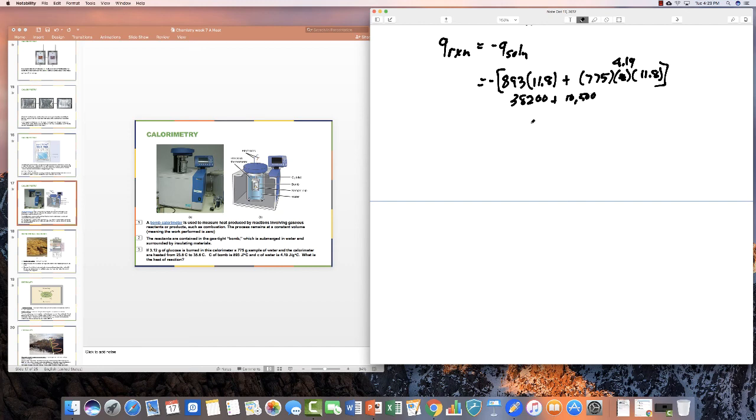or a total of 48,700 joules, or 48.7 kilojoules, and it's going to be negative sign. So it's an exothermic reaction that produces 48.7 kilojoules of heat.